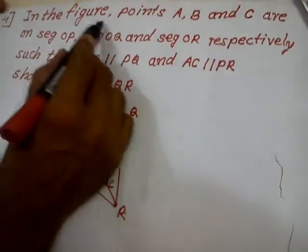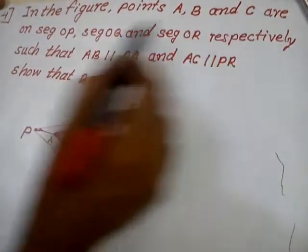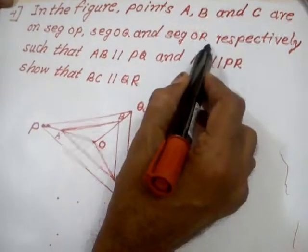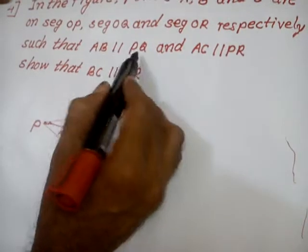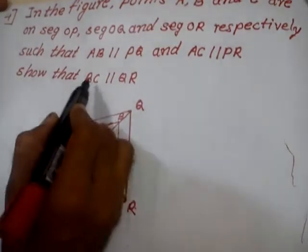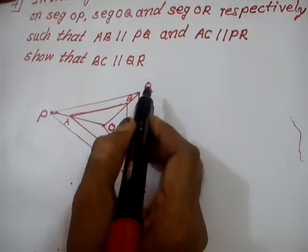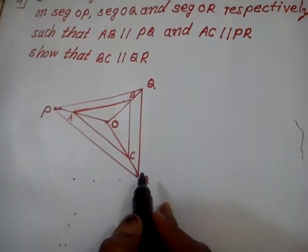In the figure, points A, B and C are on segment OP, segment OQ and segment OR respectively, such that AB parallel to PQ and AC parallel to PR. Show that BC parallel to QR. Friends, this example is very easy. Why? Because figure is already given to us.